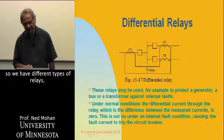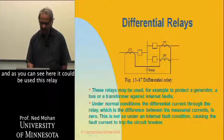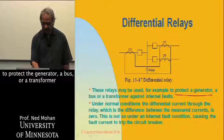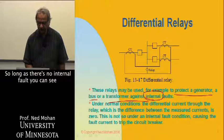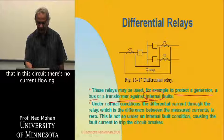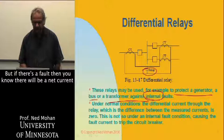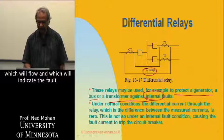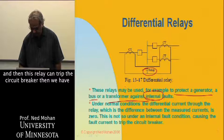We have different types of relays. One is a differential relay. As you can see, it can be used to protect a generator, a bus, or a transformer against internal faults. So long as there is no internal fault, there is no current flowing through this relay. But if there is a fault, there will be a net current which will flow and indicate the fault, and then this relay can trip the circuit breaker.